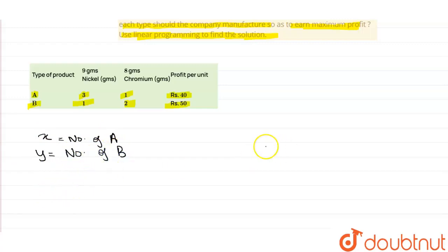So the maximize Z is equal to 40x plus 50y. This is the profit per unit - 40x of type A and plus 50y of type B. So this is a very important equation to know because at the end we have to use it.